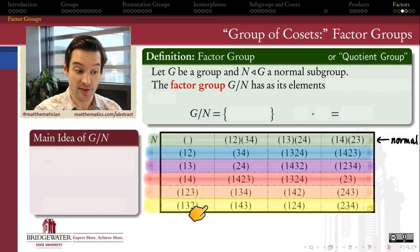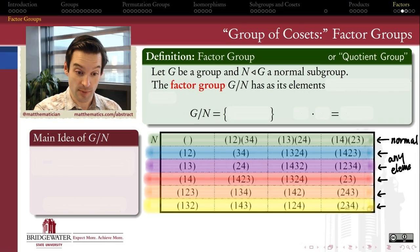Whose elements are the cosets. So I've color coded them here, so that each of the different colors here represents one of the elements in the factor group, G mod N.